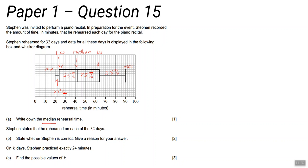Stephen says that he rehearsed on each of the 32 days. State whether Stephen is correct, give a reason for your answer. There's two marks for this and it says give a reason for your answer. That means one mark is for the answer, that's what's called an A1 mark, and one mark is for the reason, that's an R1 mark.